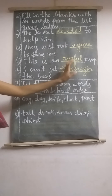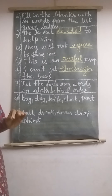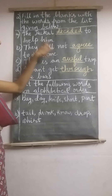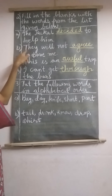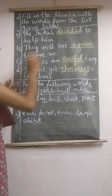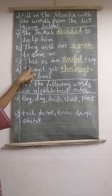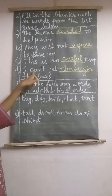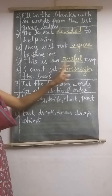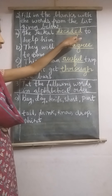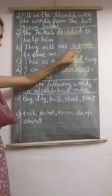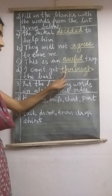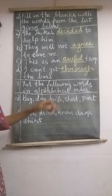So these four are the answers picked from the help box. Let us read once again: The jackal decided to help him. They will not agree to save me. This is an awful trap. I can't get through the bars. The answers are: decided, agree, awful, and through. Very good.